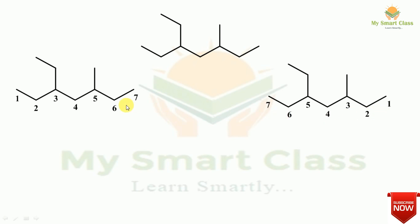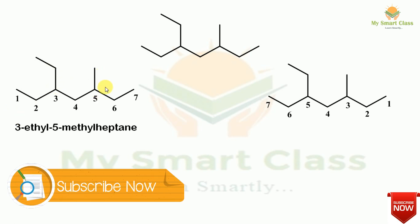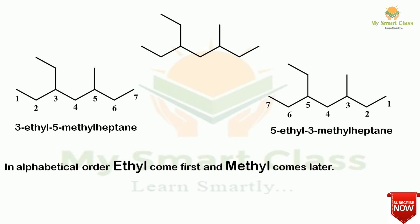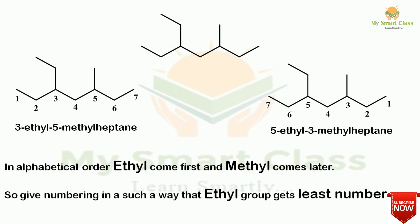So I have these two structures. From left to right, the name of this compound will be 3-ethyl-5-methylheptane. From right to left, ethyl is at position 5 and methyl is at position 3, so the name becomes 5-ethyl-3-methylheptane. We have to give priority to alphabetical order — ethyl comes first alphabetically, so we give it the lowest number 3. The correct name is 3-ethyl-5-methylheptane.